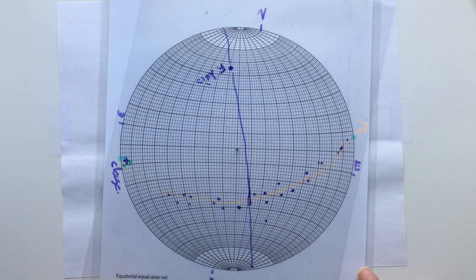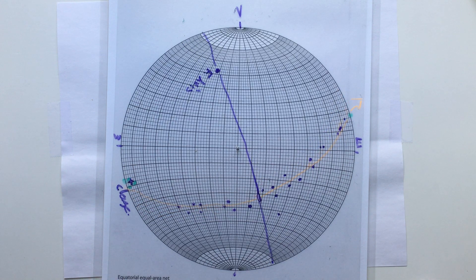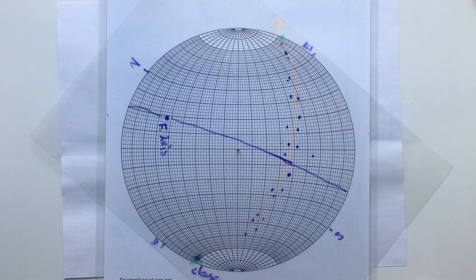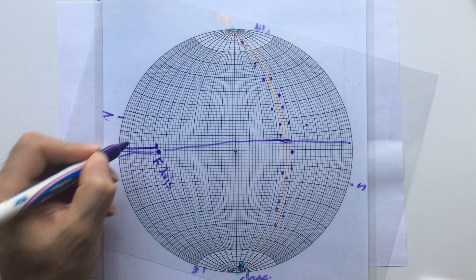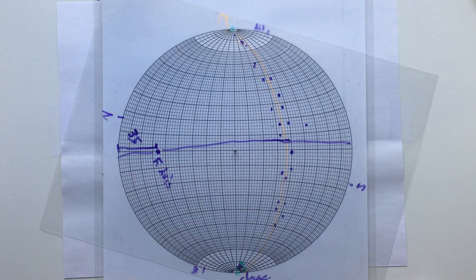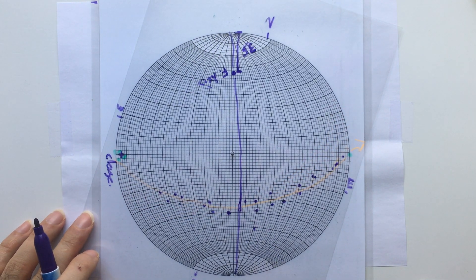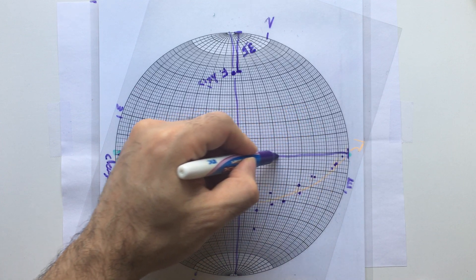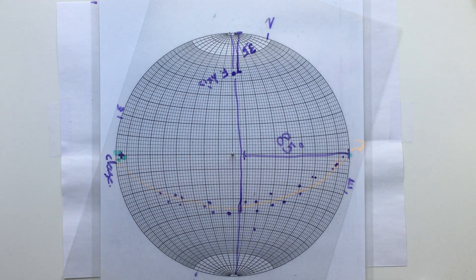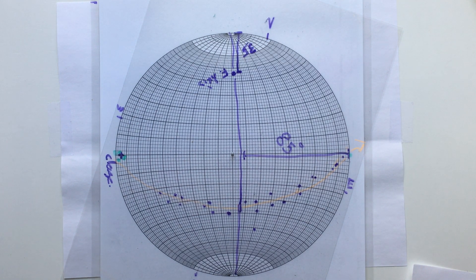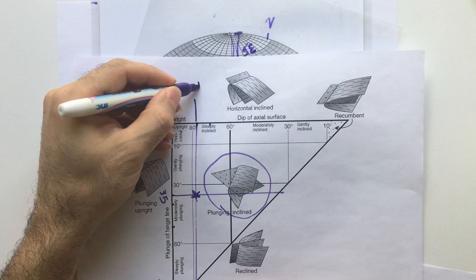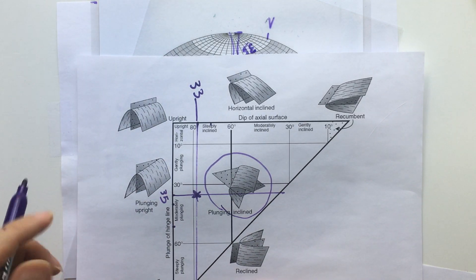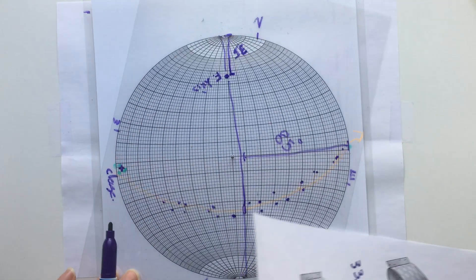So again, what I have so far is pretty similar to what we did for the previous problem. The plunge is 35 degrees — from here to here — that's the plunge of the fold axis. The dip of the axial plane is 85 degrees — from here to here — that is 85, which is exactly the same as what you found for the previous problem.